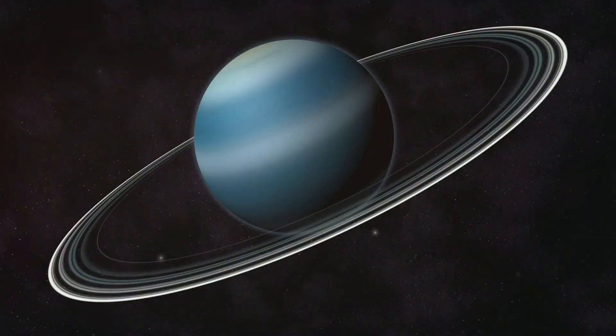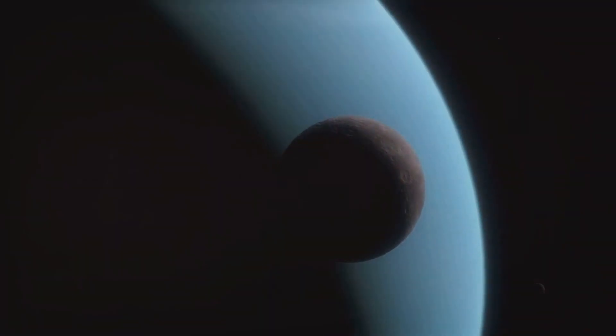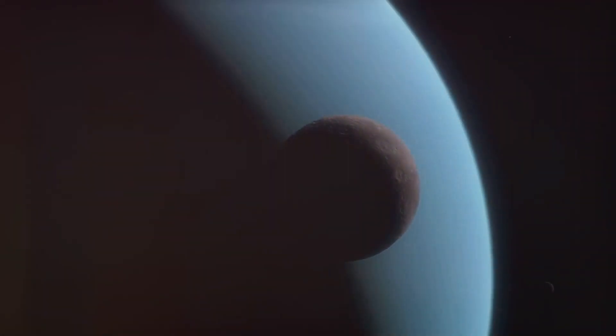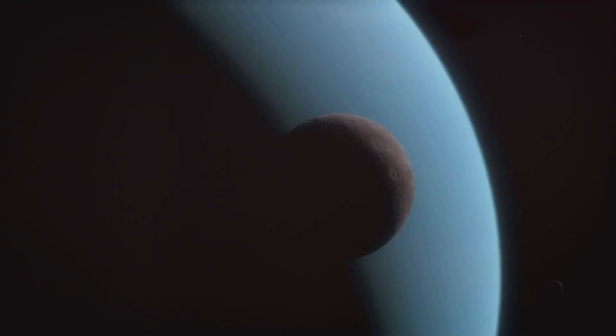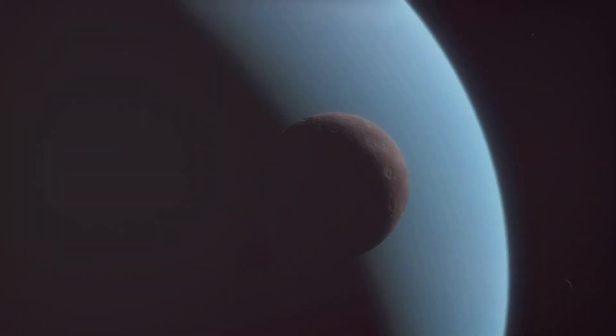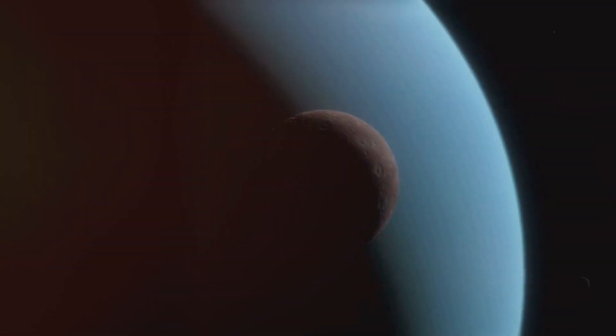The images reveal 11 of Uranus' 13 rings in detail never seen before. Just to give you a sense of the scale of this accomplishment, only two other telescopes, Voyager 2 and the Keck Observatory, have managed to capture images of these faint rings.